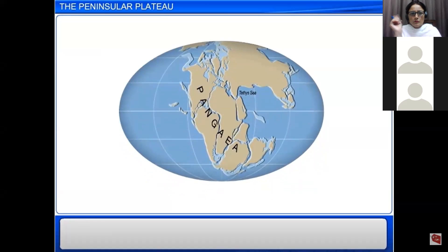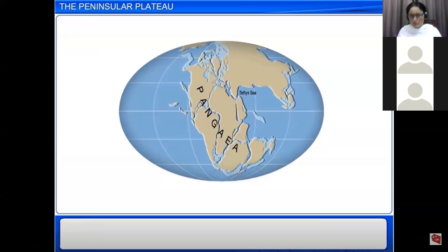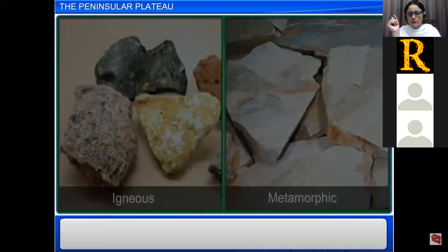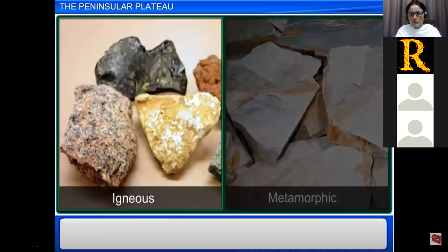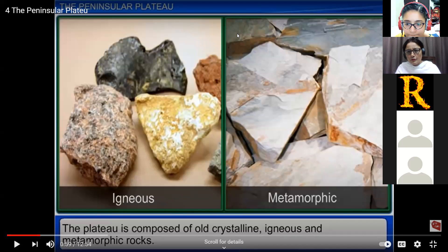The Peninsula Plateau is part of a very old landmass, which is also evident in its composition. It is composed of old crystalline igneous and metamorphic rocks. Igneous rocks are formed when lava cools down. Metamorphic rocks are formed when rocks undergo great heat and pressure.